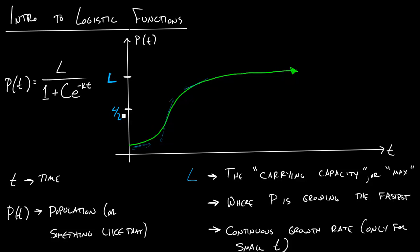And the spot I'm increasing the fastest is when the population, not the time, when the population is equal to L over 2. So when P of T is equal to L over 2. And then this other thing down here, just kind of a side note, what is this K?